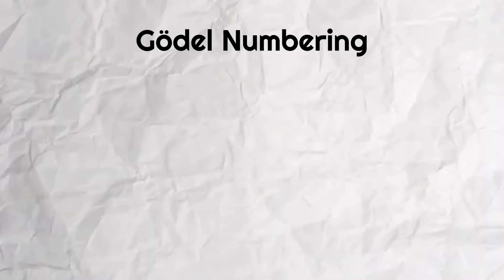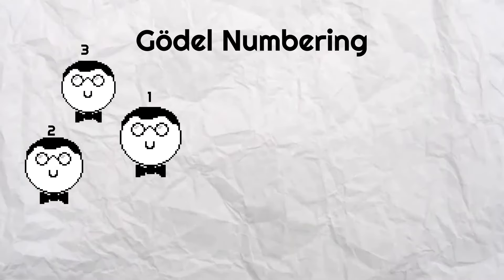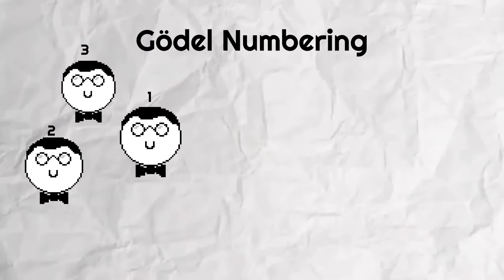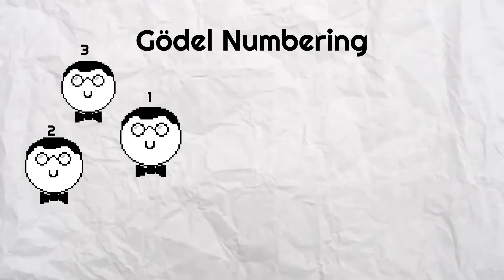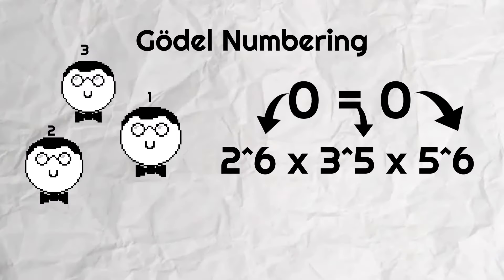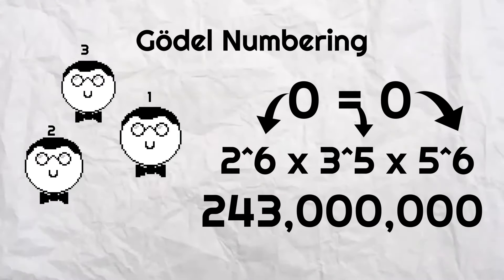Using a process called Gödel numbering, he was able to encode mathematical statements, including axioms and proofs, into a single number called a Gödel number. This allowed him to easily check what axioms were used to create and prove certain formulas, if any.